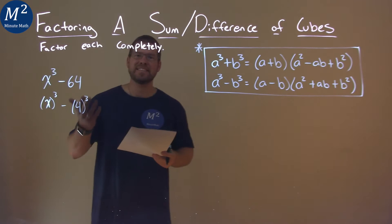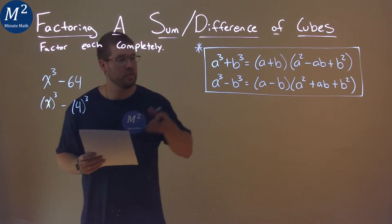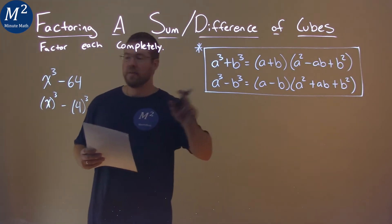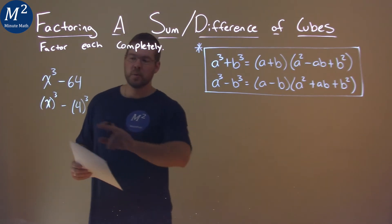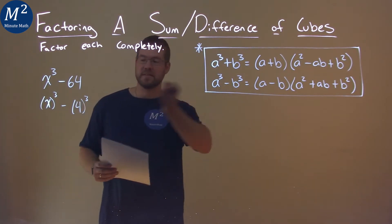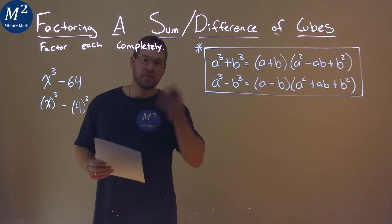And now we have a difference of cubes, so we can use the difference of cubes formula. Our a value will be x and our b value will be 4. So now we have it set up, as you can see, let's go plug it in.